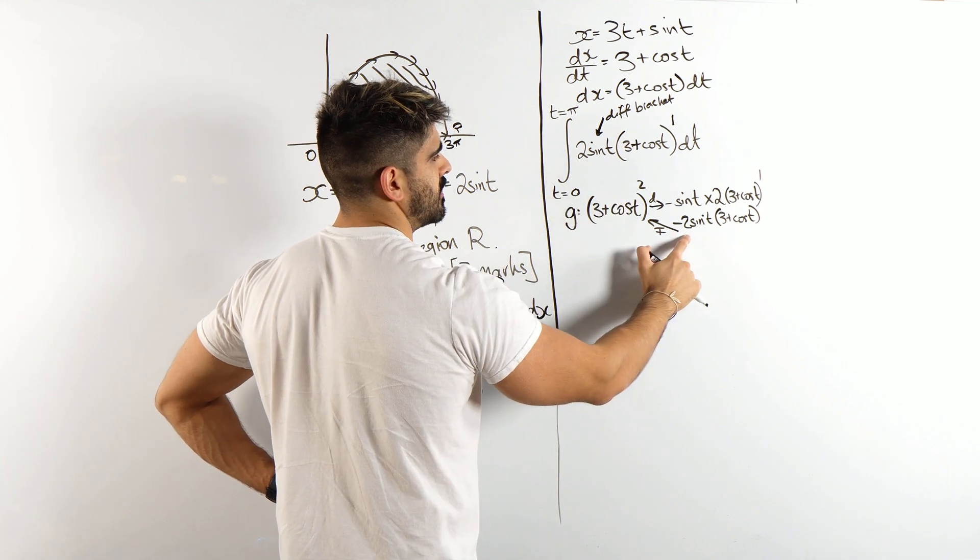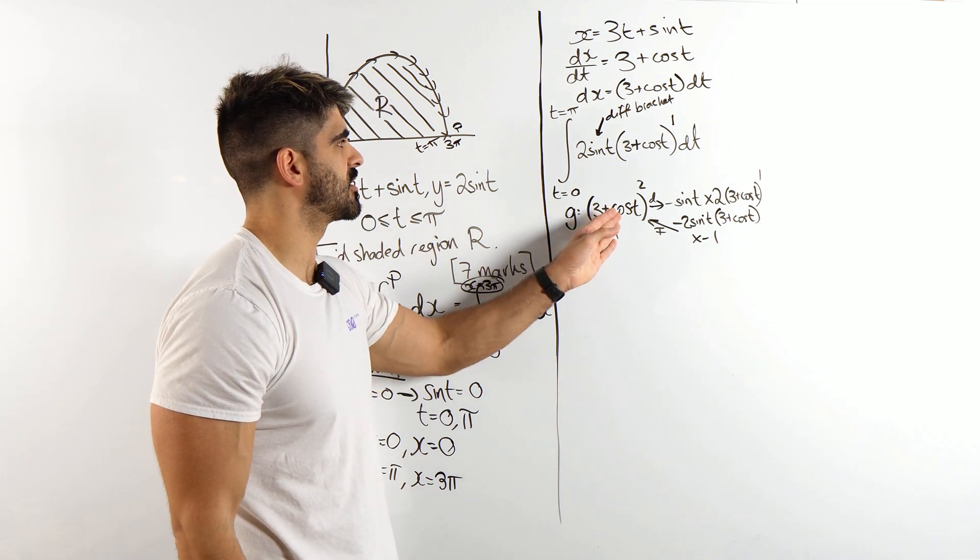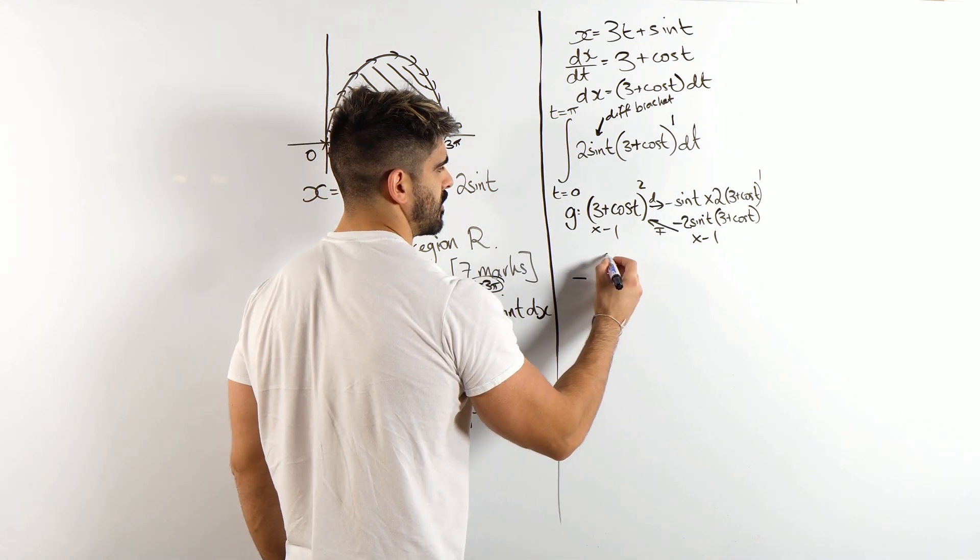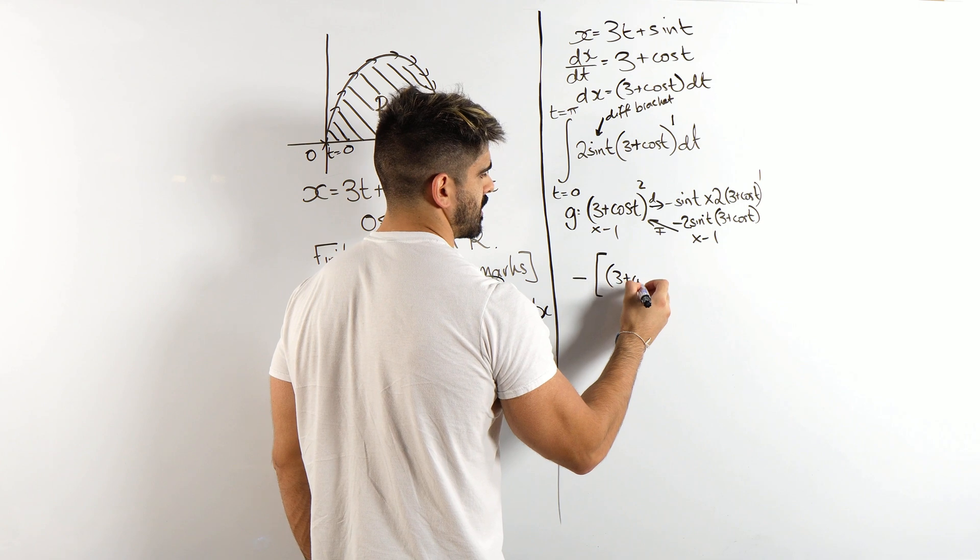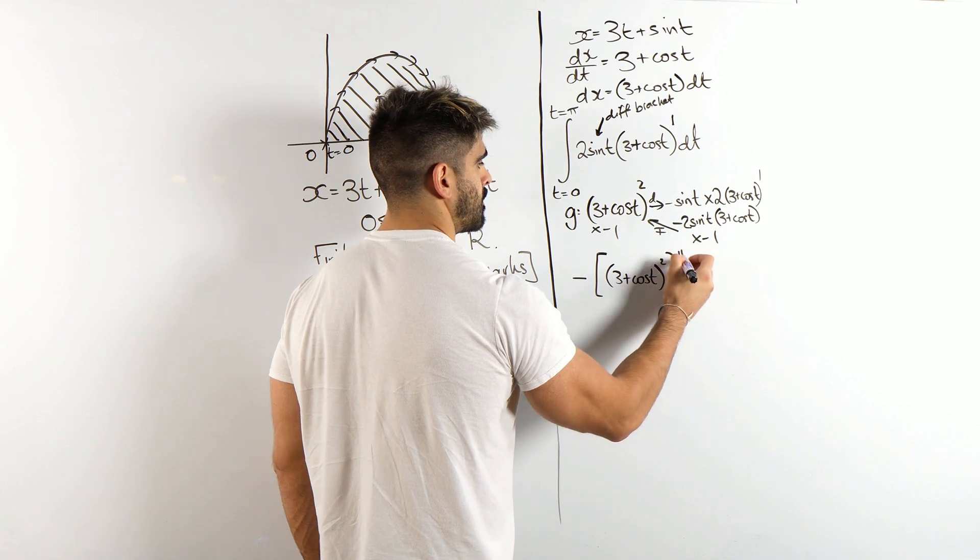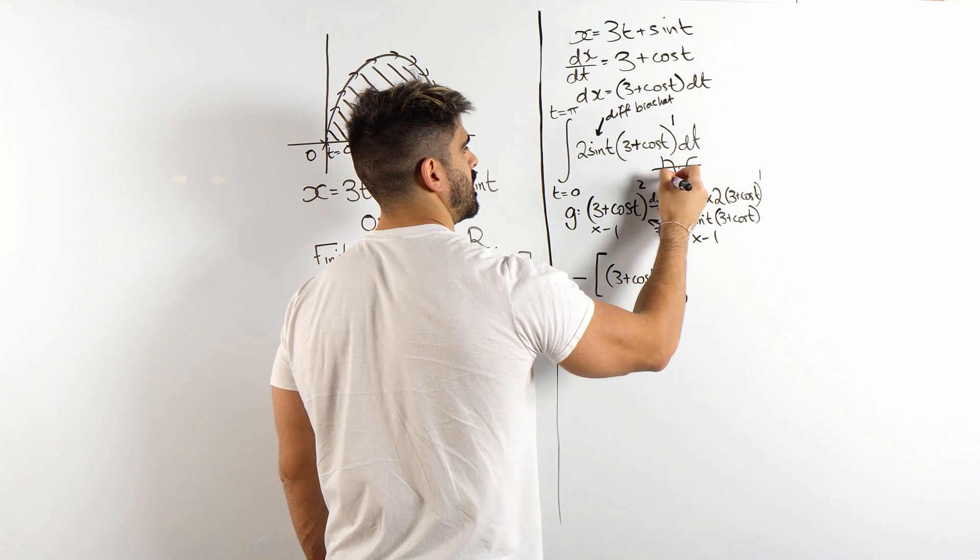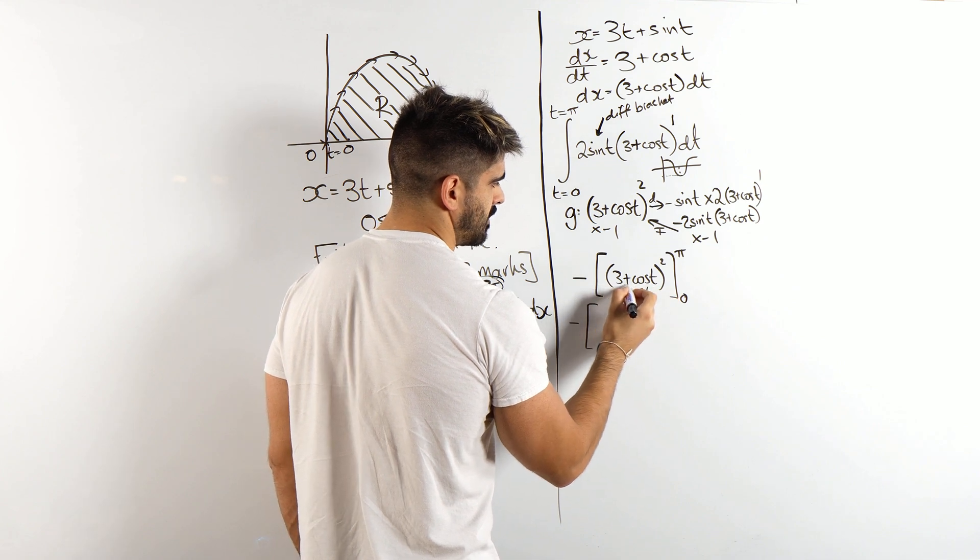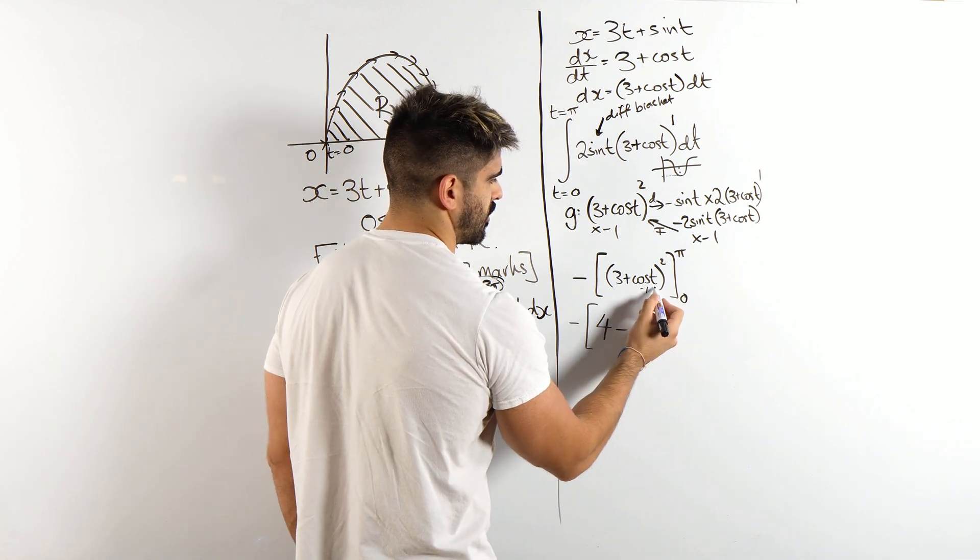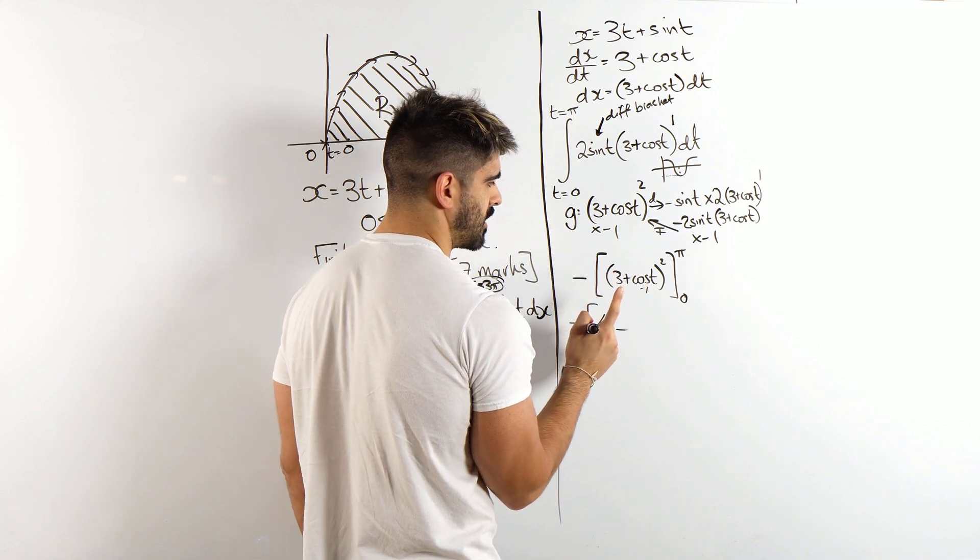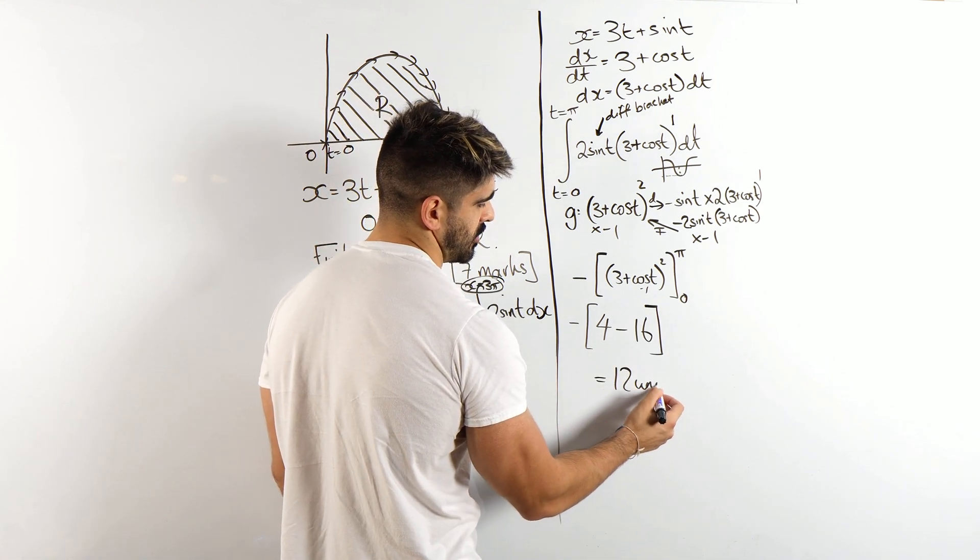But, look at this, we wanted positive, I have minus 2 sine t, so I'm going to times by minus 1. So, we just have this as our integral, and we have pi and 0. I'm going to keep that minus 1 on the outside of this, of my square bracket. So we have negative of this, I'm going to keep the minus 1 on the outside, and we have 3 plus cos t squared, between 0 and pi. And then we're just going to sub things in, so we get minus, so I'm getting pi, cos of pi is minus 1, so minus 1, so we get 3 minus 1 squared is 4. 3 minus 1 is 2 squared. Minus something in 0, cos of 0 is 1, so we get 3 plus 1, 4 squared is 16. So that gives me minus 12, the negative of that is 12 units squared.